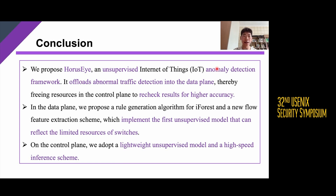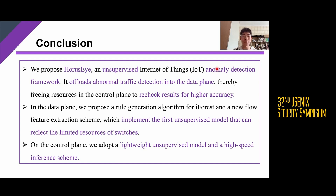In conclusion, we propose HorseEye, an unsupervised IoT anomaly detection framework. It offloads anomalous traffic detection to the data plane, thereby freeing control plane resources to achieve higher accuracy. On the data plane, we implement the first unsupervised model that respects the limited resources of switches. On the control plane, we adopt a lightweight unsupervised model and a high-speed inference schema. Thank you for listening. For more details, welcome to follow our paper, and if you have any questions, please contact us by email.